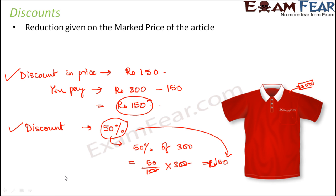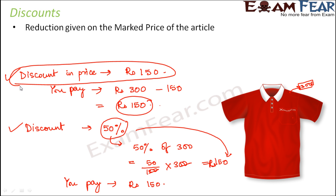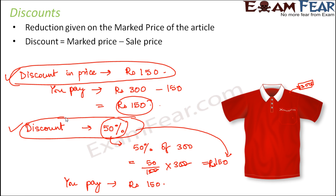Once you calculate the discount in price, you can easily find out how much you have to pay — so you pay 150 rupees. These are two ways of expressing discount: in price or in percentage. Discount is always equal to the marked price minus the sale price. Whatever we pay to the shopkeeper is the sale price.